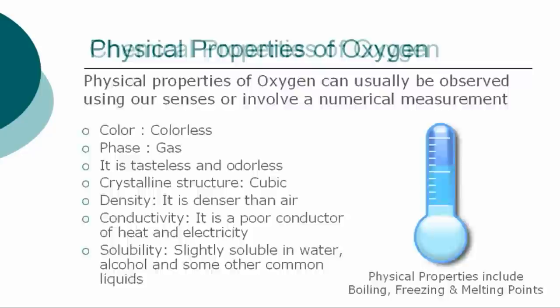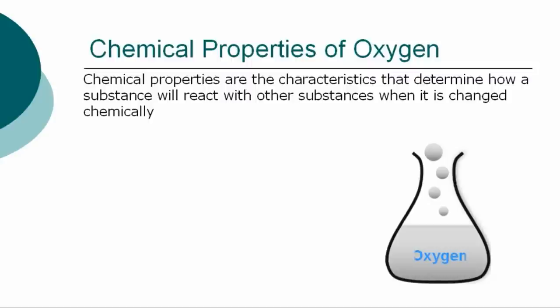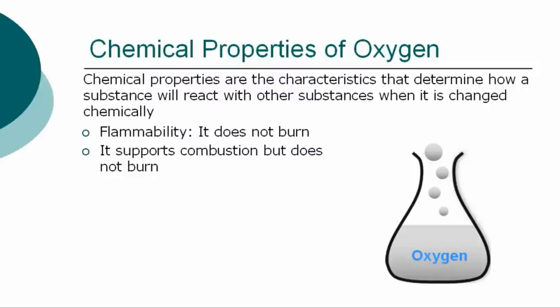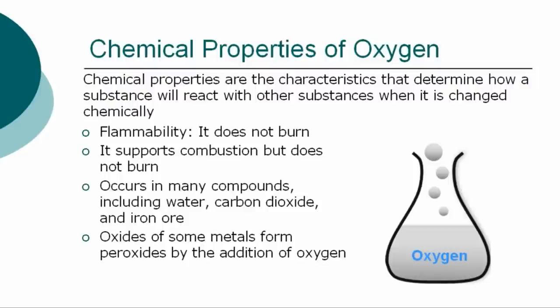Chemical properties are the characteristics that determine how oxygen will react with other substances when it is changed chemically. The chemical properties of oxygen are: Flammability - It does not burn. It supports combustion, but does not burn. It occurs in many compounds, including water, carbon dioxide, and iron ore. Oxides of some metals form peroxides by the addition of oxygen.